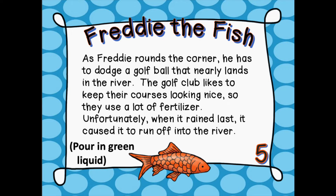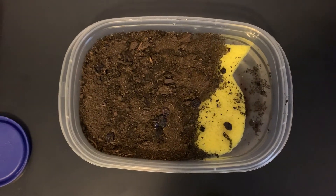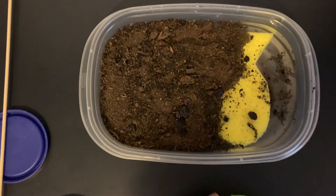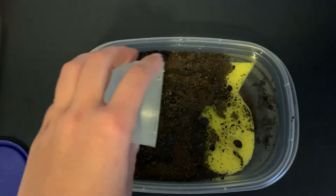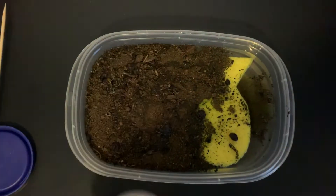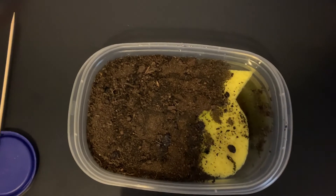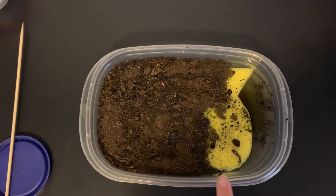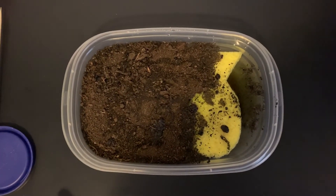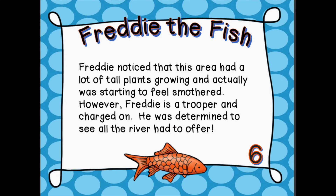As Freddie rounds the corner, he has to dodge a golf ball that nearly lands in the river. The golf club likes to keep their courses looking nice, so they use a lot of fertilizer. Unfortunately, when it rained last it caused it to run off into the river. We're going to add the green liquid here — and as you can see it's starting to make the water look a murky green color from the fertilizer. Freddie is looking even more sad than before.